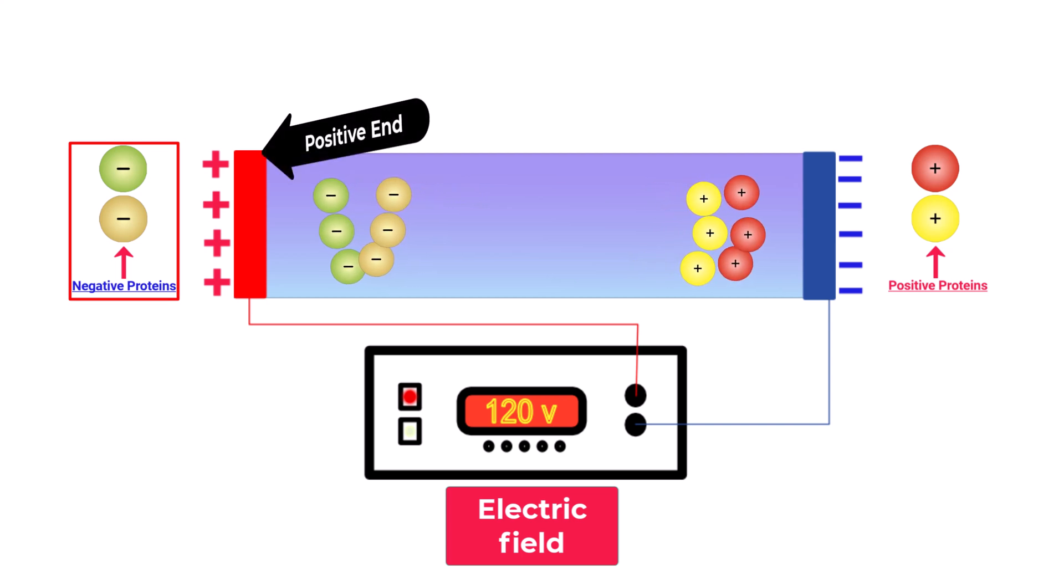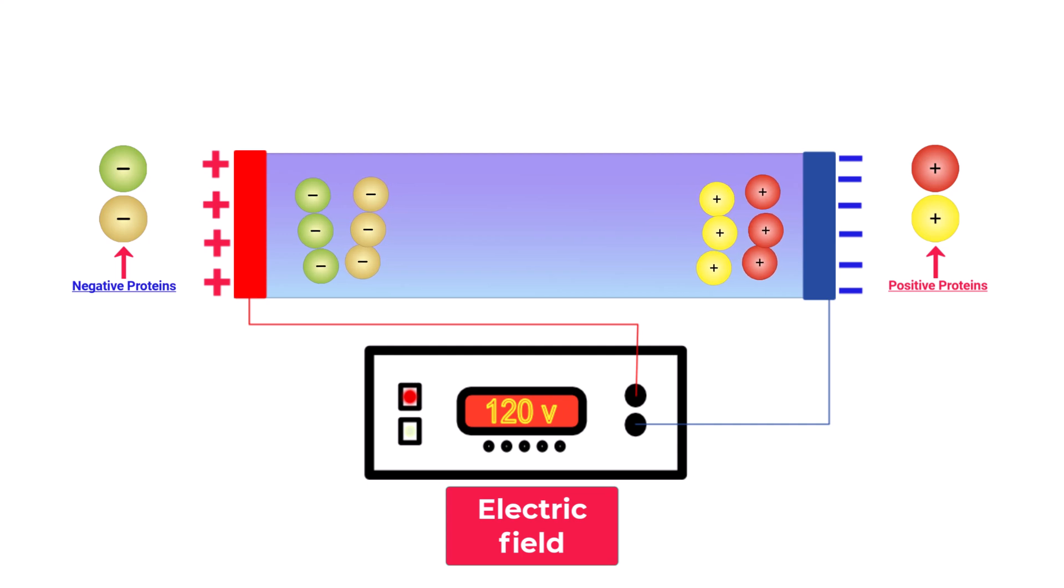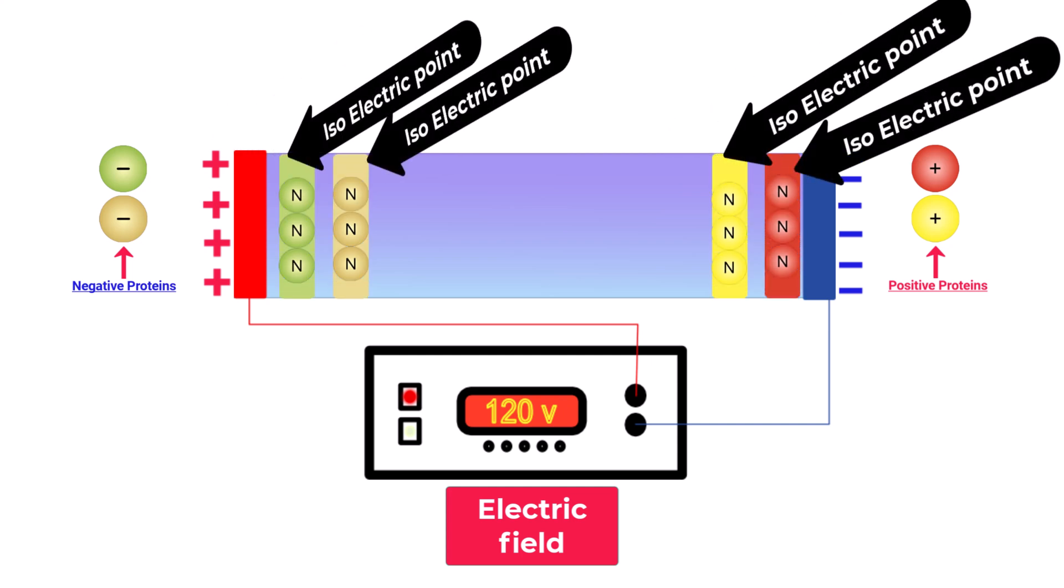These proteins keep moving until they reach a point where their net charge becomes zero. This is where they stop. This point is called the isoelectric point of these proteins.